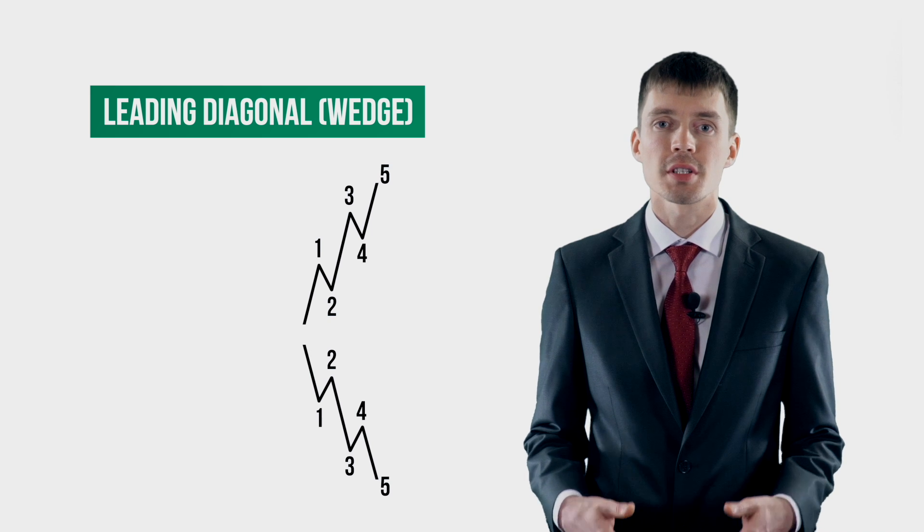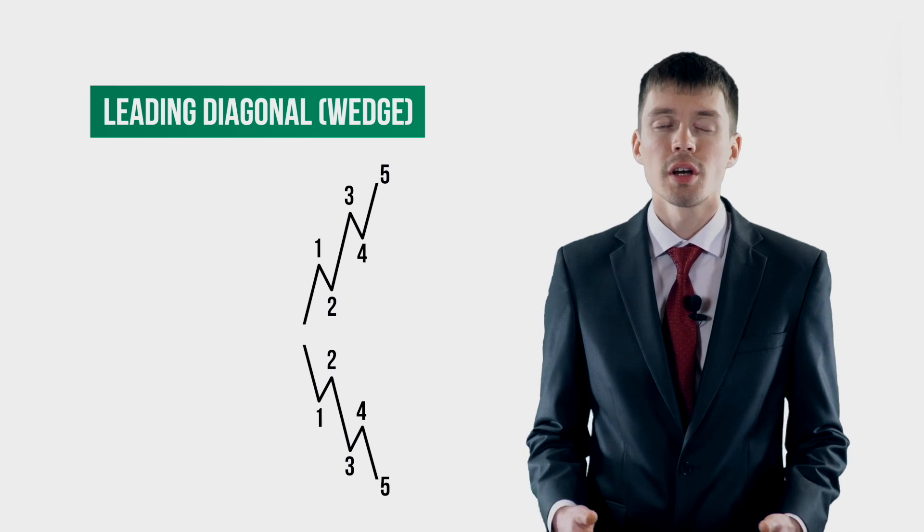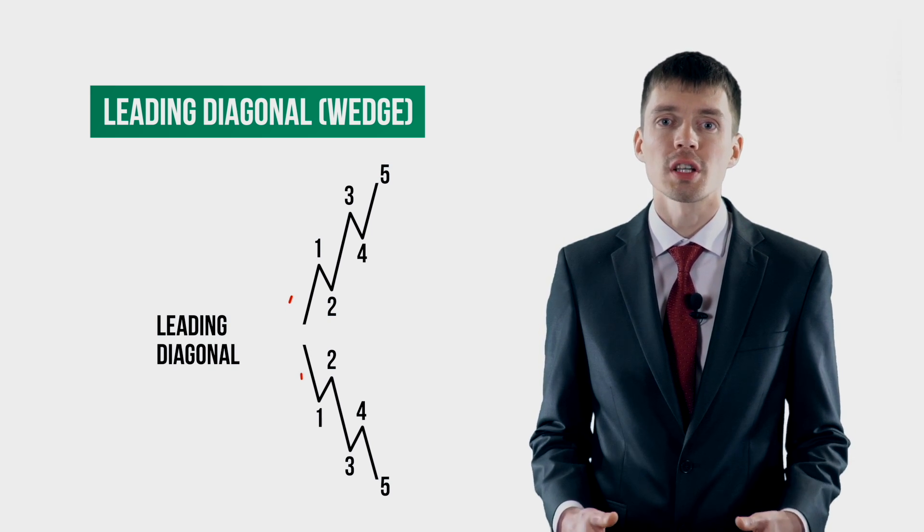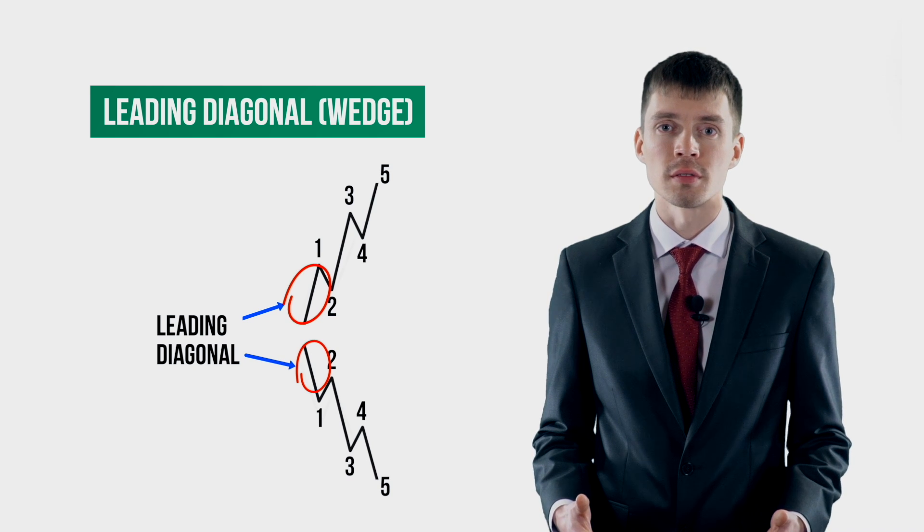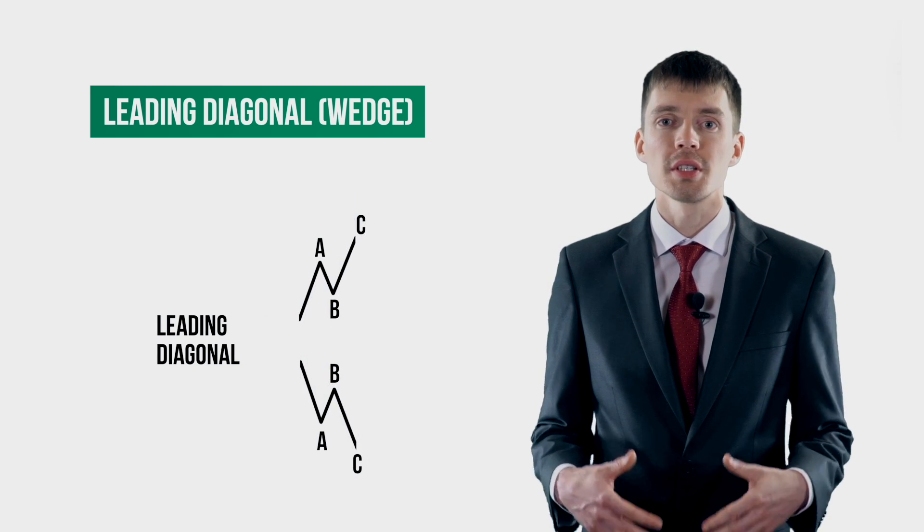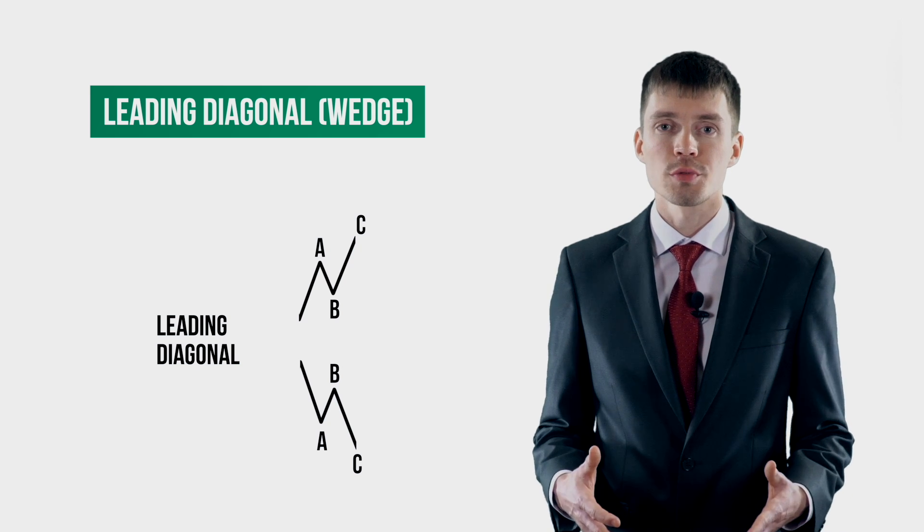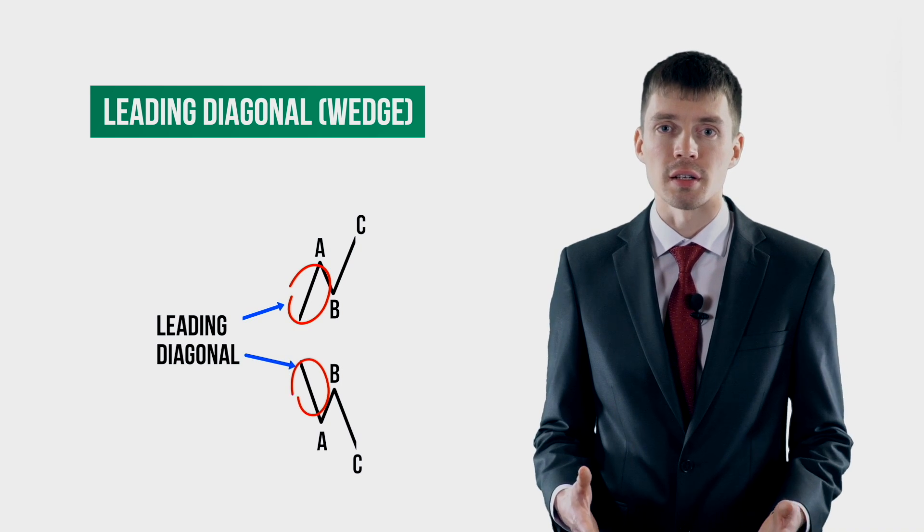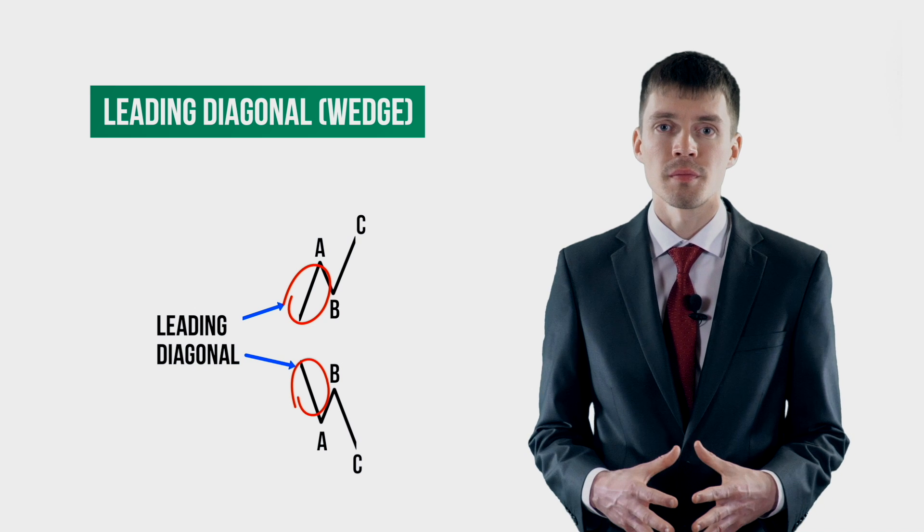That is, if we schematically show the upward and downward impulses, the leading diagonal can appear only on the position of these waves, that is wave one. And if we schematically show the downward and upward zigzags, then the leading diagonal can appear only at the place of wave A on the zigzag.